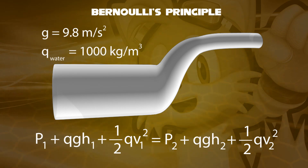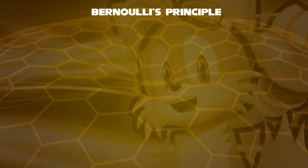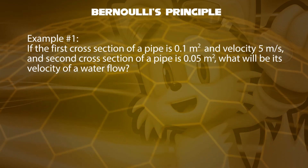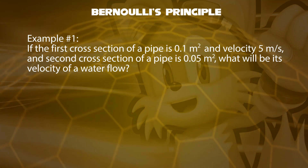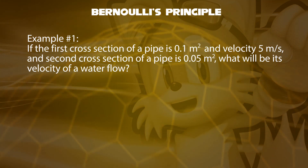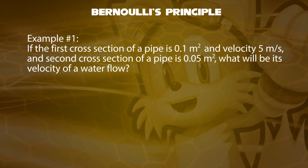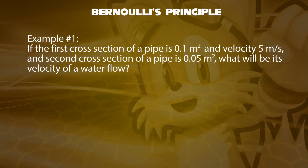These are the two equations we have learnt about. For example, if the first cross-section of a pipe is 0.1 square meters and a velocity of 5 meters per second, and the second cross-section of a pipe is 0.05 square meters, what will be the velocity of the water flow?